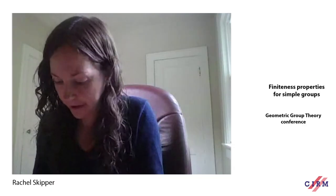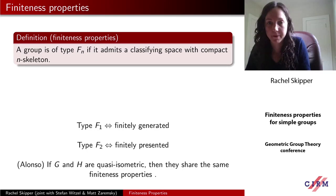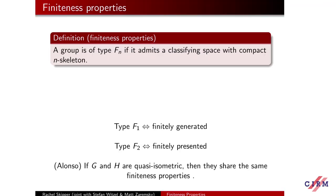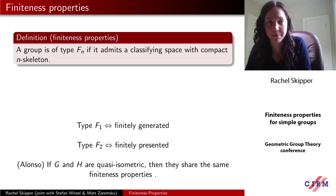The tool that we're going to use to understand infinite simple groups is that of finiteness properties. So let me remind you what we mean by finiteness properties. A group is said to be of type Fn if it admits a classifying space with a compact n-skeleton. Rather than reminding you what a classifying space is, let me just construct an example one for you.